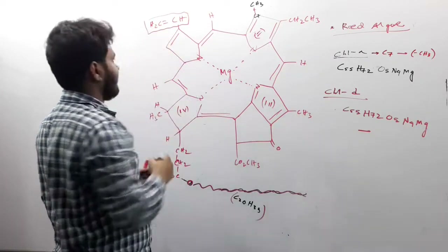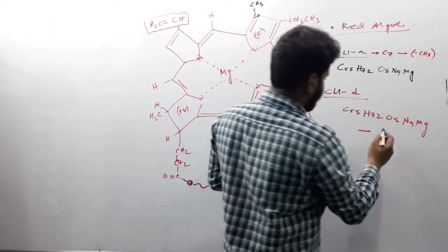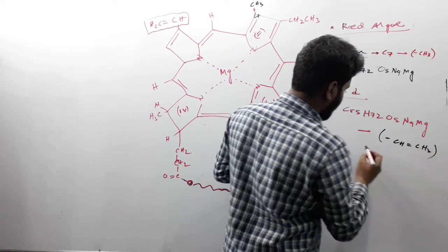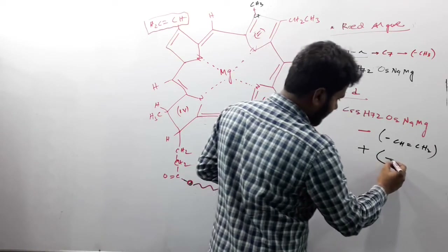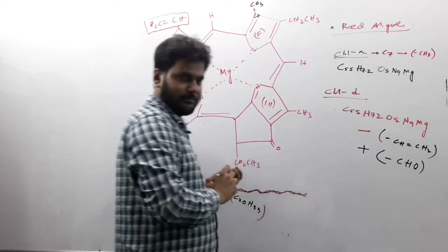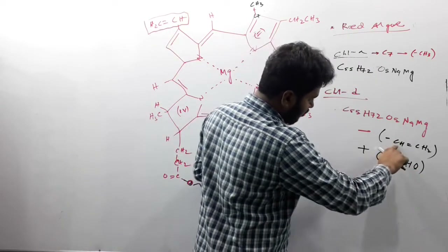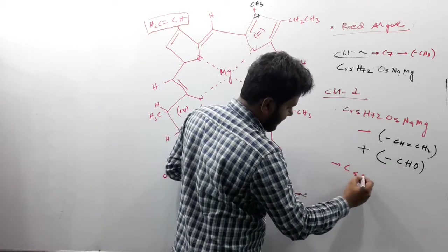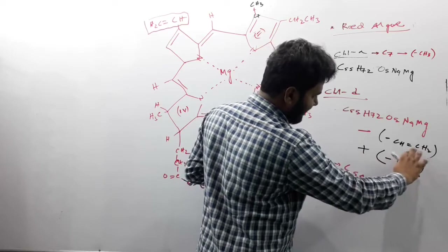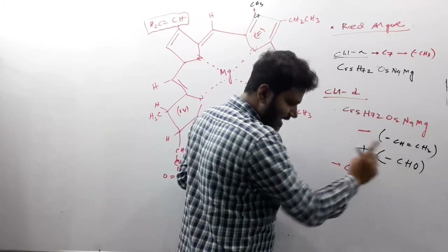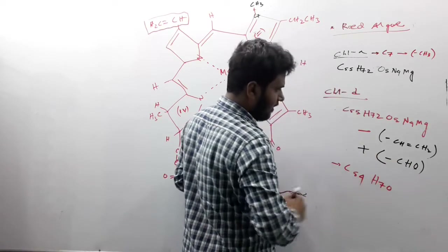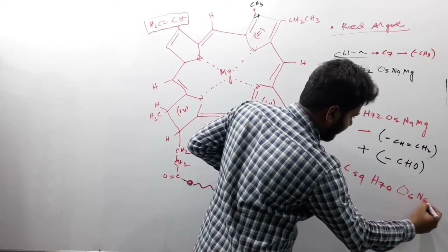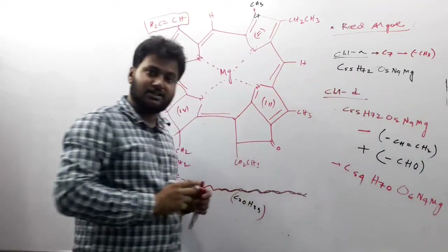Starting from chlorophyll A (C55, H72, O5, N4, Mg): the vinyl group is removed and an aldehyde group is added. Two carbons removed, one carbon added — so carbon number decreases by one: C54. Three hydrogens removed, one added — so hydrogen decreases by two: H70. One new oxygen added — O5 becomes O6. N4 and Mg remain. The final formula of chlorophyll D is C54, H70, O6, N4, Mg.